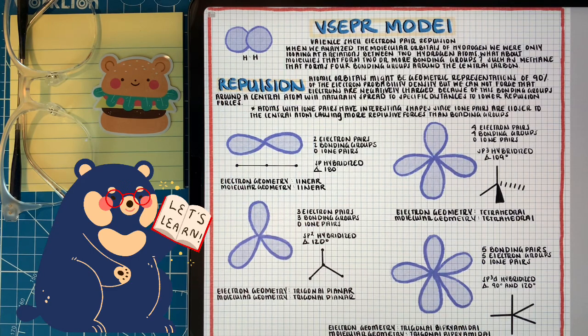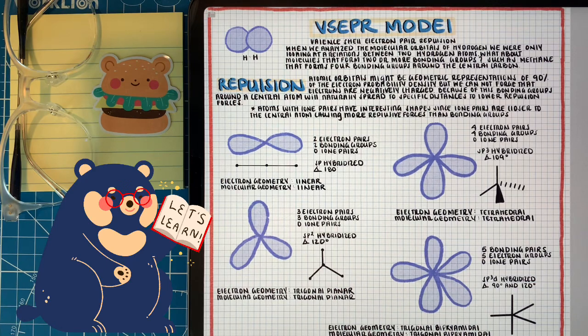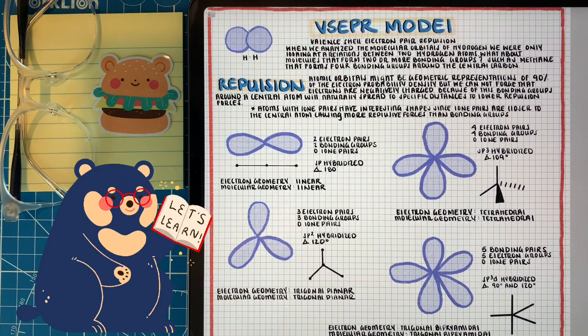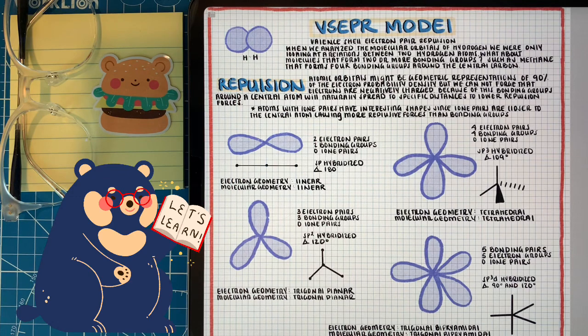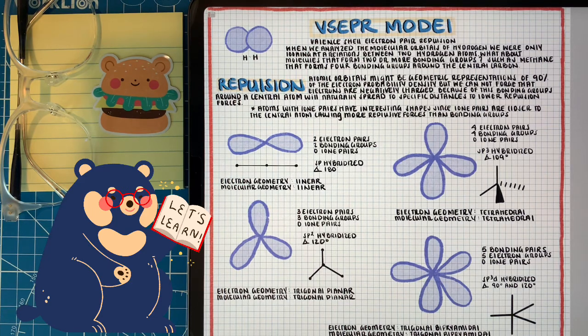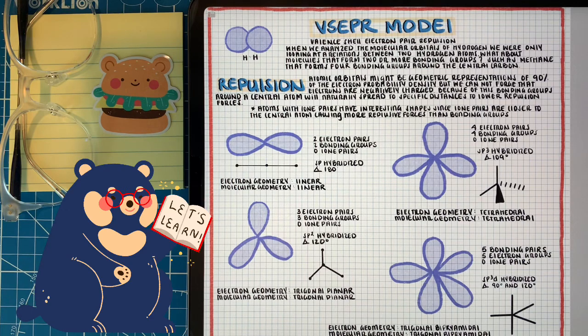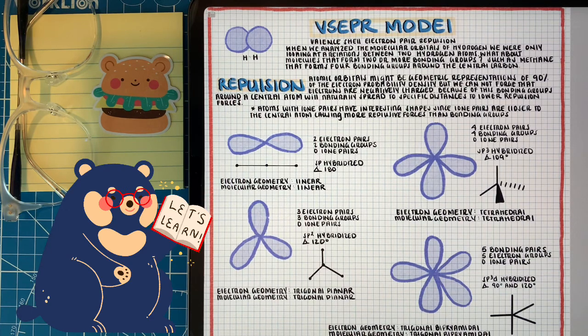As we can see here with the first option, which is linear, well, the greatest distance that we can have two things is on opposite ends. Hence, when we have a central atom and two bonding groups, we're going to have a linear geometry, 180 degrees, and that's the farthest they can be. And when we slowly start adding more and more bonding groups, we get more complicated shapes, such as with three and trigonal planar, four with tetrahedral, and five with trigonal bipyramidal.